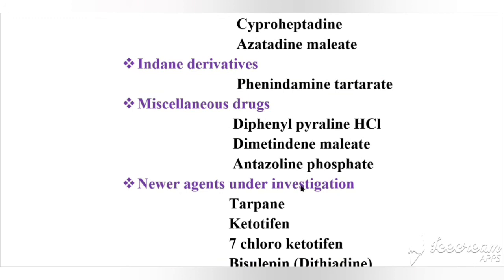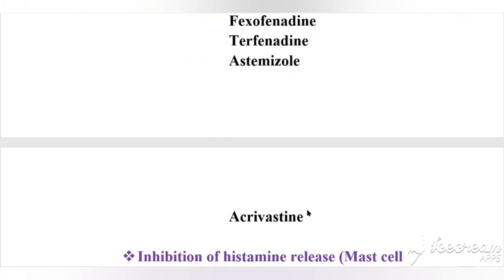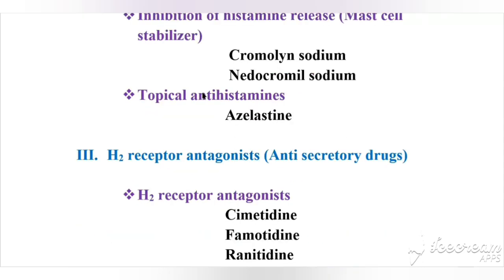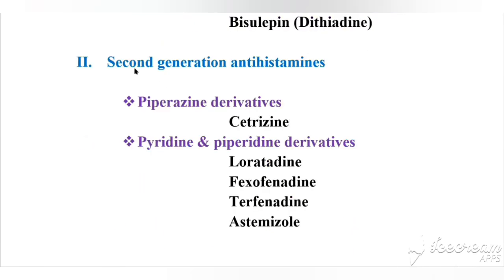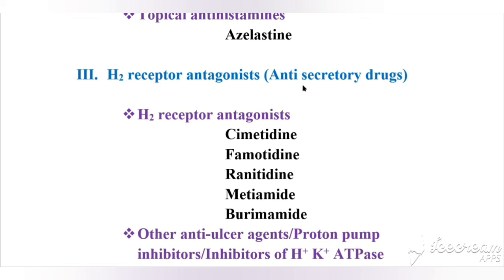The second type is second-generation antihistamines, which have four subtypes. First is piperazine derivatives, example cetirizine. Second is pyridine and piperidine derivatives, examples loratadine, fexofenadine, terfenadine, astemizole, and acrivastine. Third is inhibition of histamine release, otherwise called mast cell stabilizers, examples cromoglicate sodium and nedocromil sodium. Fourth is topical antihistamines, example azelastine.